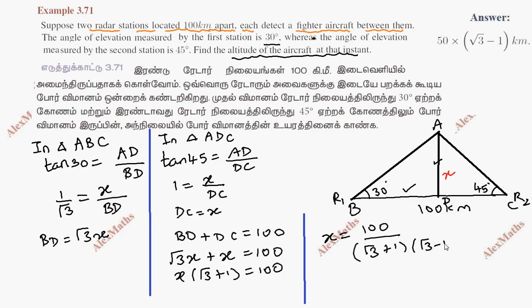To rationalize, multiply by the conjugate: (root 3 minus 1) over (root 3 minus 1). The numerator becomes 100(root 3 minus 1). The denominator uses the formula (a plus b)(a minus b) equals a squared minus b squared, giving us (root 3) squared minus 1 squared.